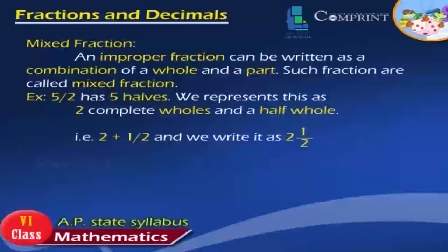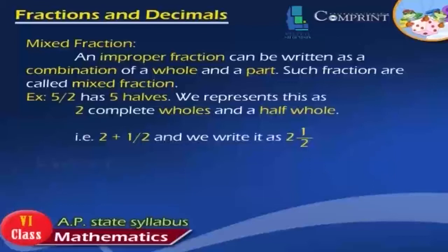Mixed Fraction. An improper fraction can be written as a combination of a whole and a part. Such fractions are called Mixed Fractions. Example: 5 by 2 has 5 halves. We represent this as 2 complete wholes and a half whole. That is, 2 plus 1 by 2, and we write it as 2 and 1 by 2.